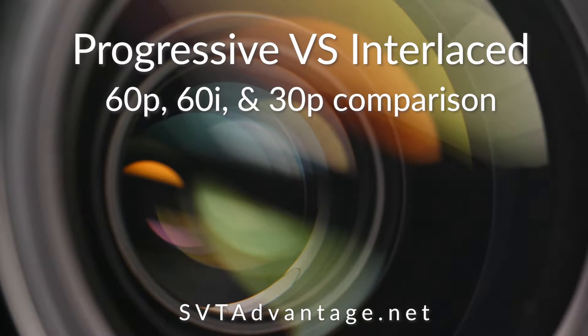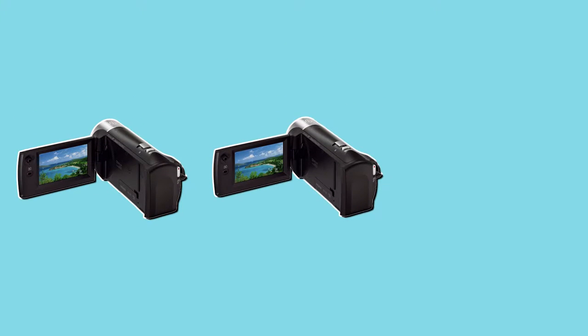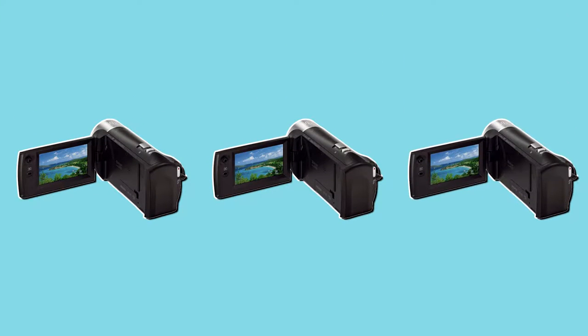Understanding frame rates can take your footage to the next level. Three cameras were set up to compare to each other: two at 60 frames per second, with one having a progressive scan and the other interlaced. The last camera is progressive at 30 frames per second.